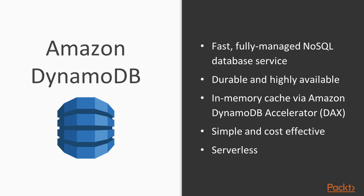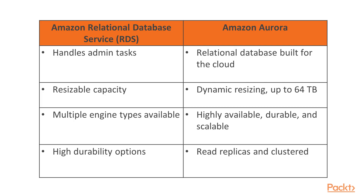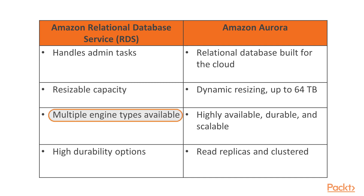DynamoDB is serverless in that you don't need to do any administrative tasks like choosing instance types, upgrading, patching, and backups. Amazon Relational Database Service (RDS) is a managed database service in AWS where AWS handles administrative tasks such as upgrades, patching, and backups, and allows you to resize instances and choose disk size. It supports multiple database engines such as Oracle, MySQL, and SQL Server, allowing you to migrate your on-premise database if needed. It is also highly durable.